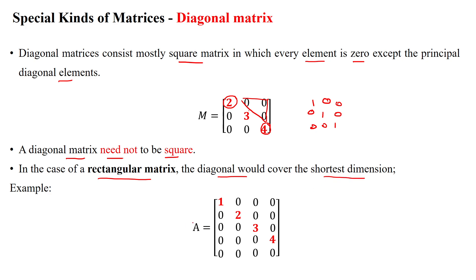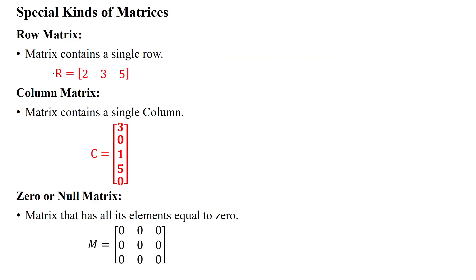For example, this matrix is a 5 by 4 matrix, having 5 rows and 4 columns. Since 5 is greater than 4, we have diagonal elements along the shortest dimension, which is 4. So we have 4 diagonal elements here. This is one special kind of matrix. Another matrix is the row matrix.